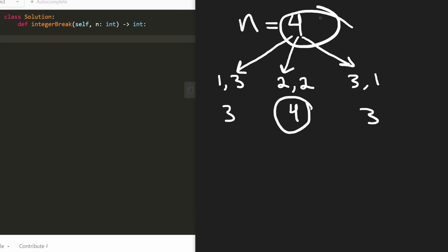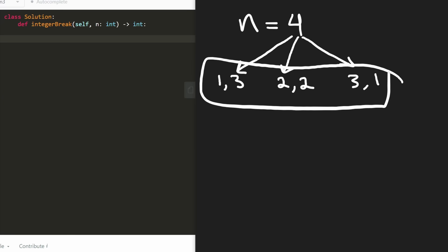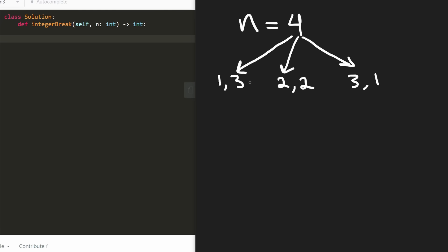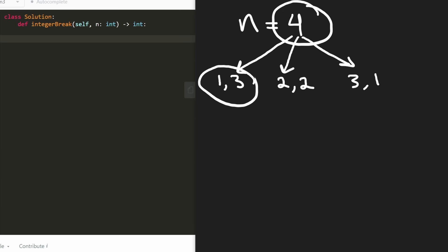But how do we know we're done at this point? With the path that has one and three, we can't break up the one anymore — that's kind of a base case. The integer one cannot be broken down further. But we could possibly break this three up even more. We don't have to break up the three though — we were required to break up the four because it's the integer given as input. For sub-problems we're not required to break them up further; we can if it maximizes the result, but if it doesn't we shouldn't.